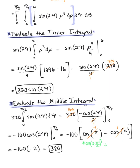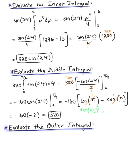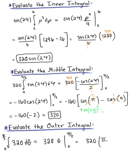Now we're ready for the final integral. The outer integral with respect to theta is the integral from 0 to π/2 of 320 dθ, which integrates to 320θ evaluated from 0 to π/2. Evaluating gives 320 × π/2, for a final answer of 160π. This is the mass of the solid object.